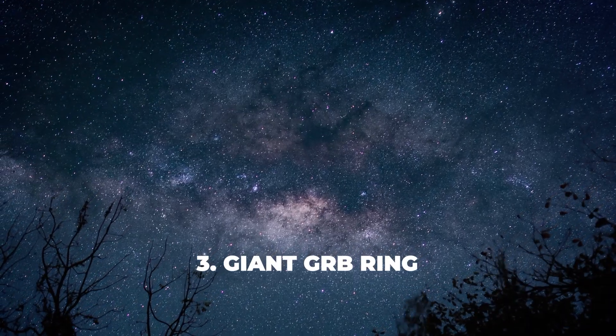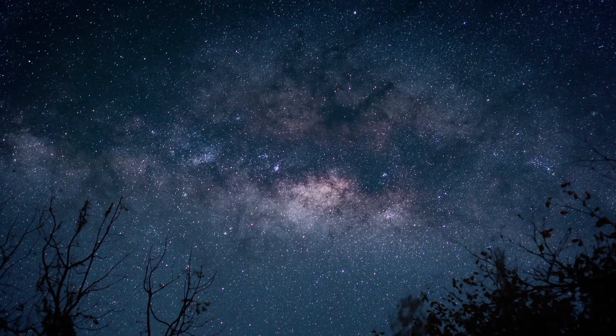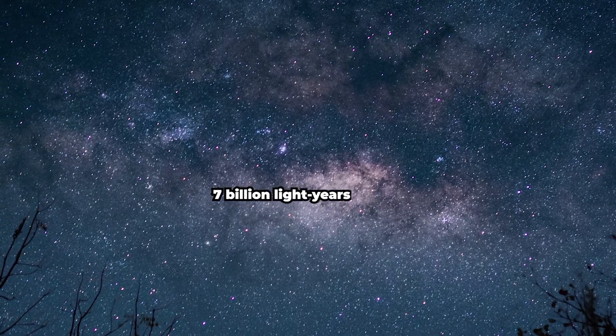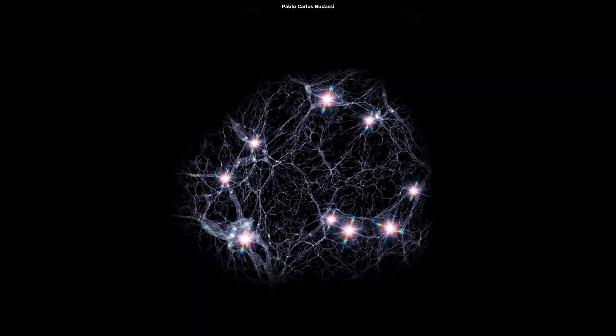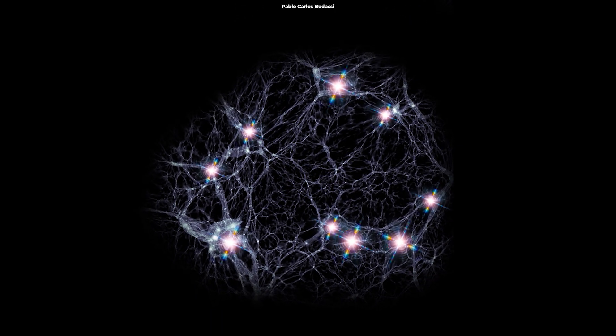At number 3, we have the mysterious and mind-bending Giant GRB Ring, about 7 billion light-years away. The Giant GRB Ring, discovered in 2015, is an enormous structure in space composed of Gamma Ray Bursts.